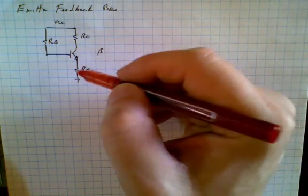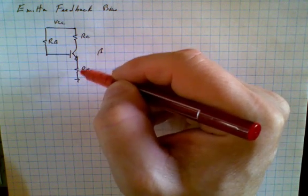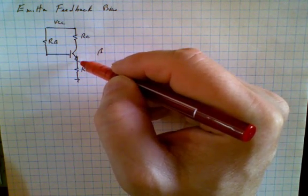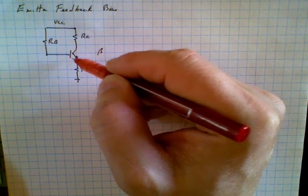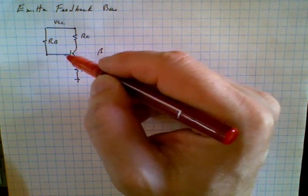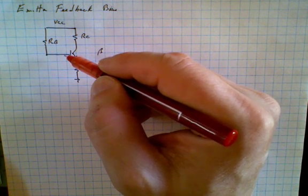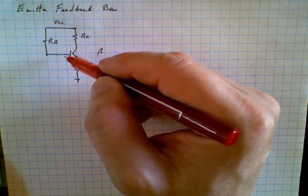It's called that because any change in current in the emitter is going to cause a change of voltage at the emitter. And because the voltage at the emitter and base is fixed, that means that there will be a change of voltage at the base as well. This is actually a form of feedback.